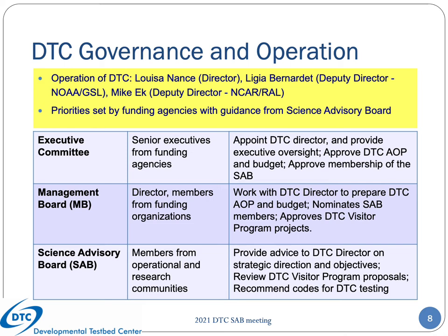The management board is comprised of two representatives of each partner organization and works with the DTC director to prepare the DTC's operating plan, nominates SAB members, and is responsible for approving funding for the DTC visitor projects. The science advisory board is comprised of representatives from both the operational and research communities and is tasked with providing the DTC director with advice on strategic direction and objectives, reviewing the DTC visitor program proposals, and recommending codes for testing.